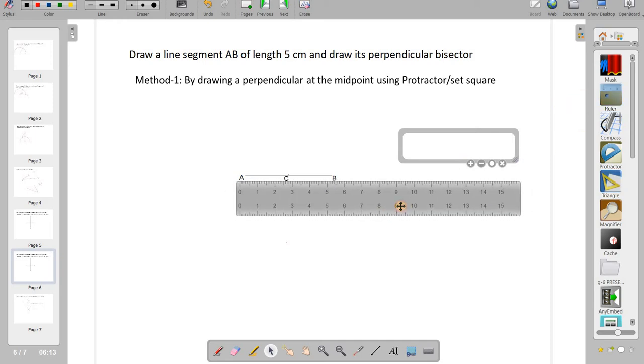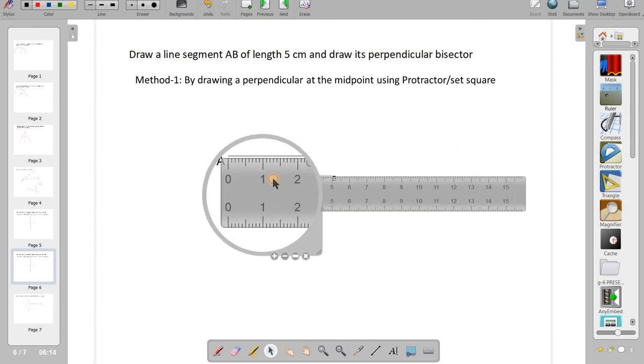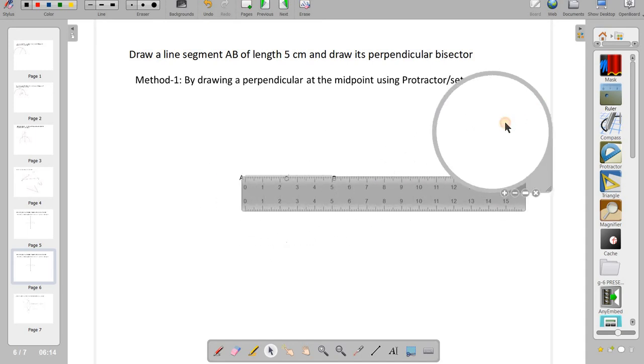I will just show it to you. AB is the line segment. I have drawn it. It's 5 cm in length from here to here. You can see it.